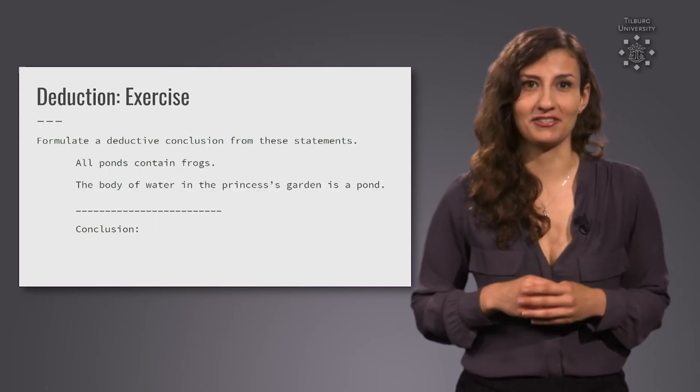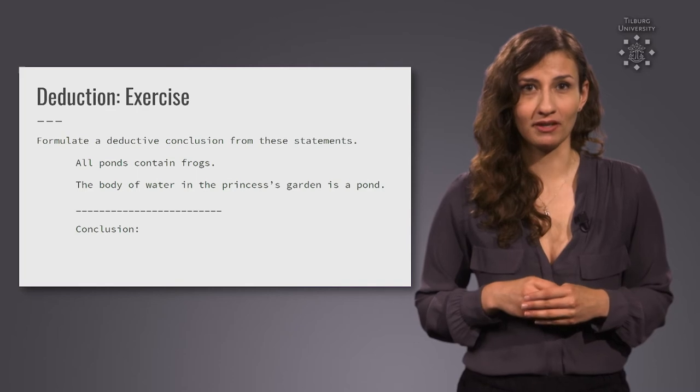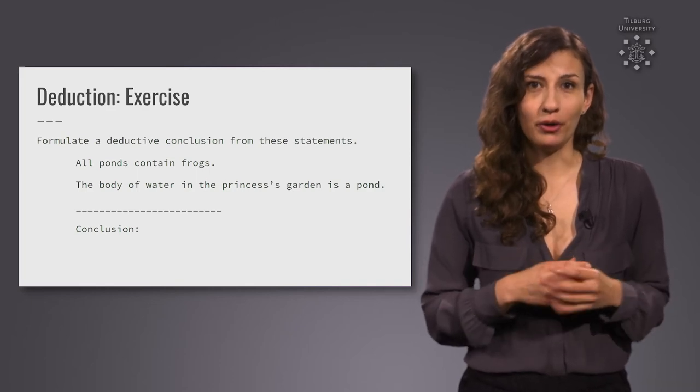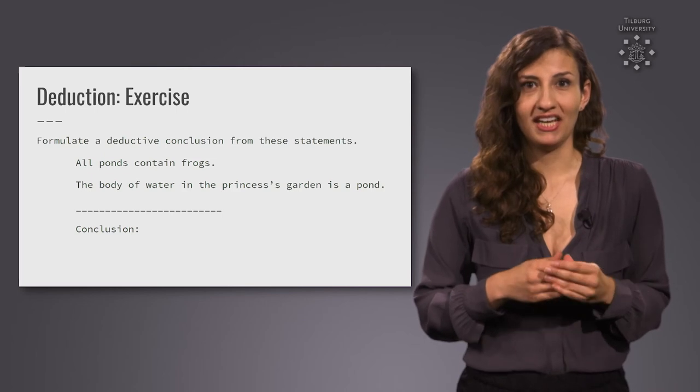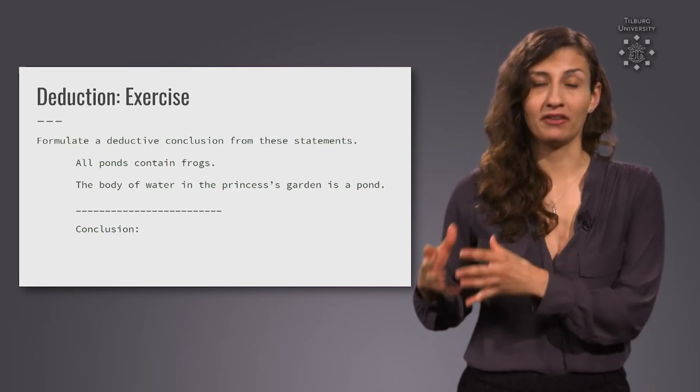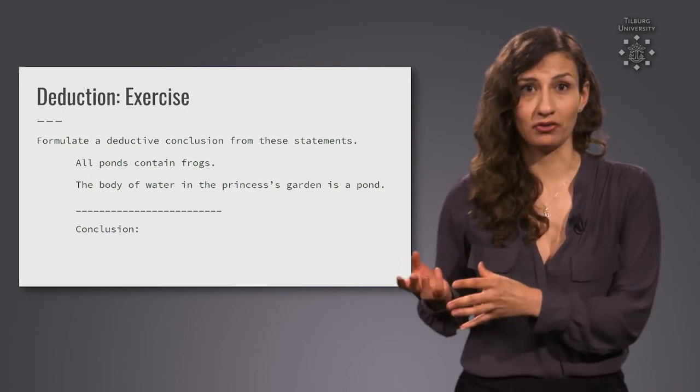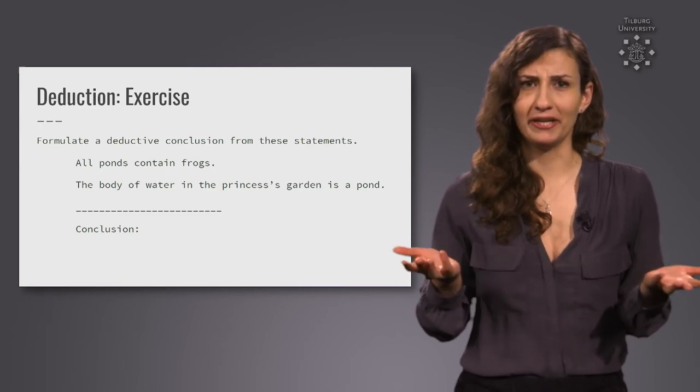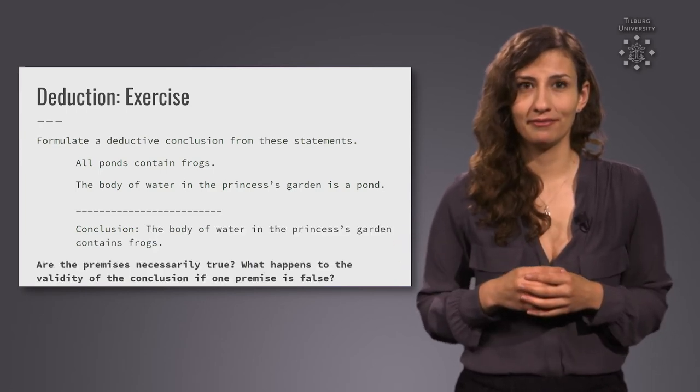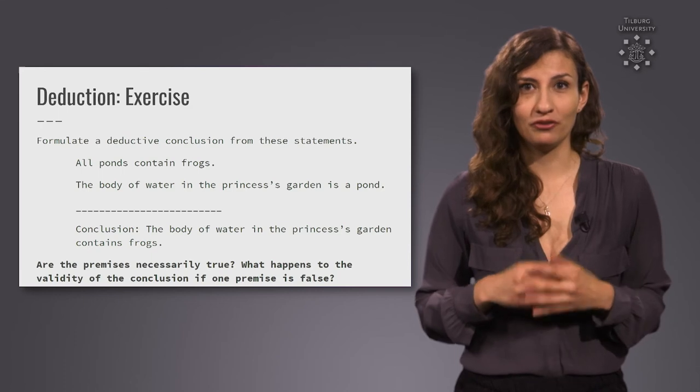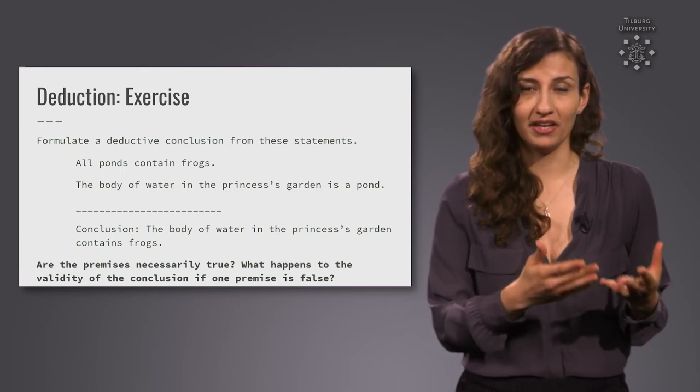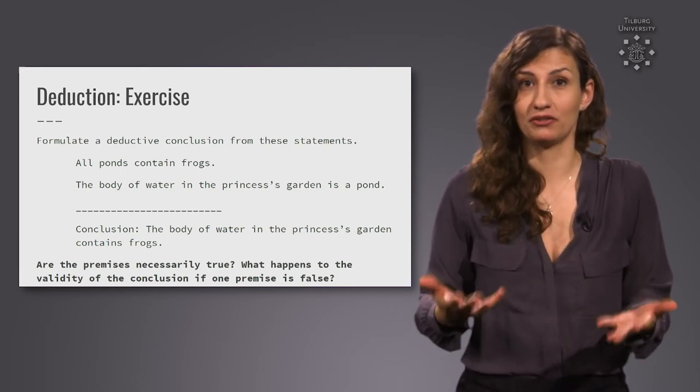Here's another exercise. If we know that all ponds contain frogs and that the body of water in the princess's garden is a pond, we can deduce what? That's right, we can deduce that the body of water in the princess's garden must contain a frog.